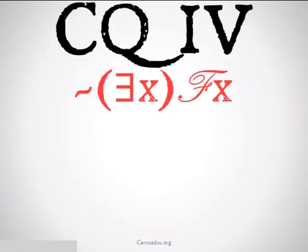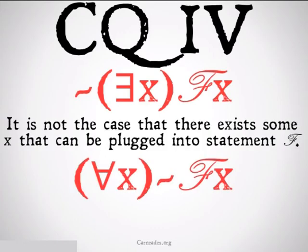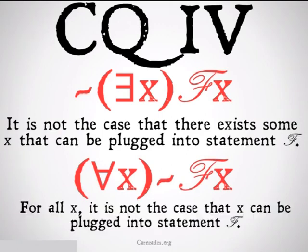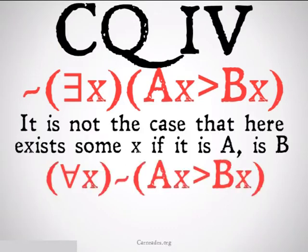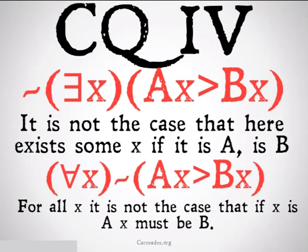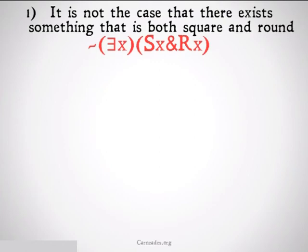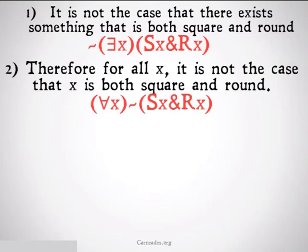Change of quantifier number four: it's not the case that there exists an x such that x is F; therefore, for all x, it's not the case that x is F. For example: it's not the case that there exists something that is both square and round; therefore, for all x, it is not the case that x is both square and round. If nothing exists with those properties, then for all things, they cannot have those properties.